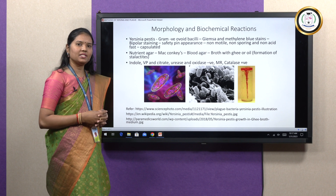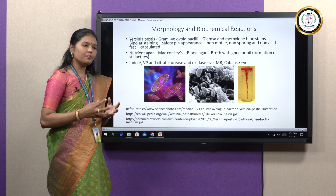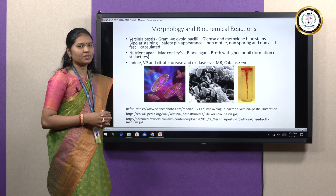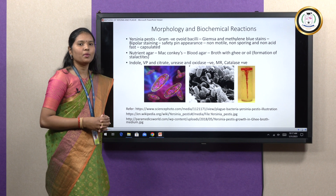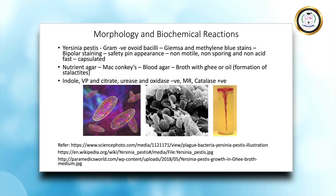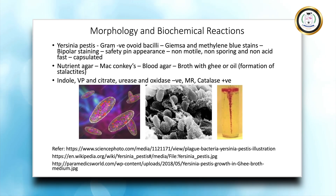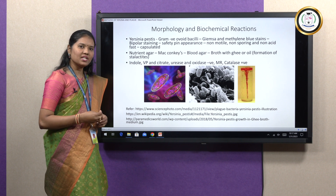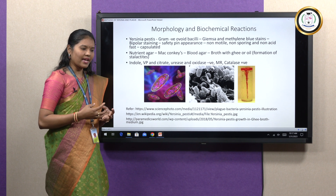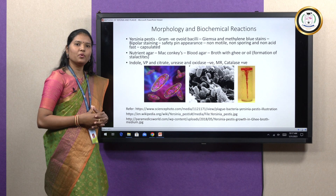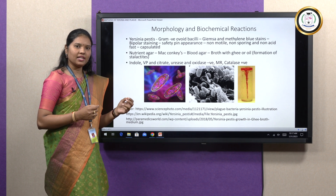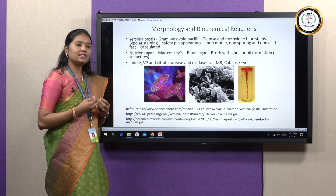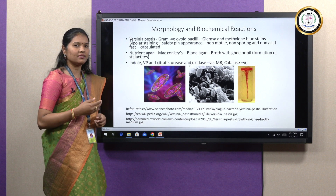These organisms are present in rodents and infect them. The most important species among the genus Yersinia is Yersinia pestis, which is responsible for causing the most dreadful disease called plague. Yersinia is a gram-negative ovoid bacillus that is rod-shaped, with rounded ends and convex sides. When stained with Giemsa stain and methylene blue stain, they show a characteristic bipolar staining, which means the ends of the bacilli are stained thoroughly but the center portion is left clear, giving a characteristic safety pin appearance under the microscope.